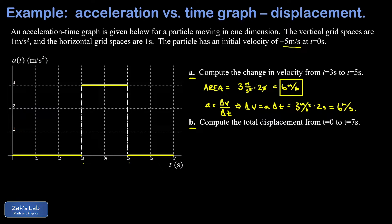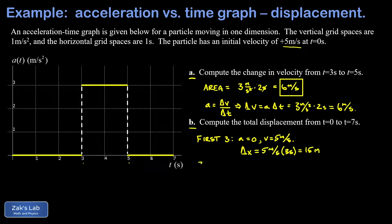We have a change in velocity of positive six meters per second over that two-second interval. For part B, I want the total displacement from t equals zero to t equals seven. Because the acceleration changes twice, we need to break this into three parts. In the first three seconds, acceleration was zero — that's a constant velocity problem where v equals five meters per second. The displacement is simply speed times time: five meters per second times three seconds.